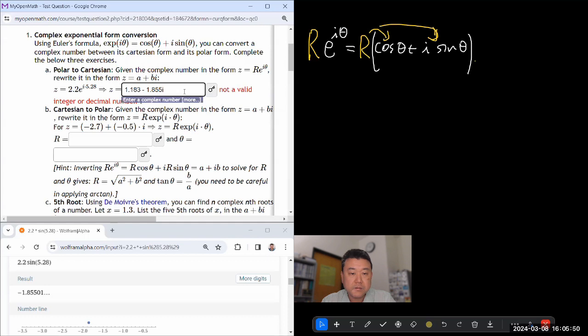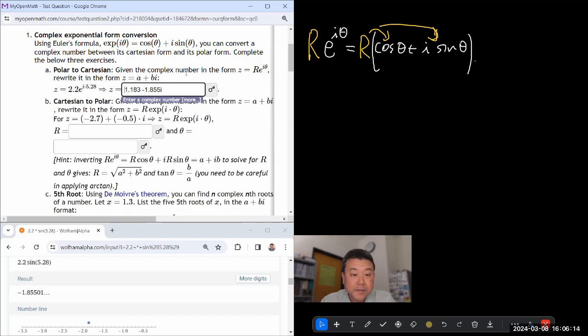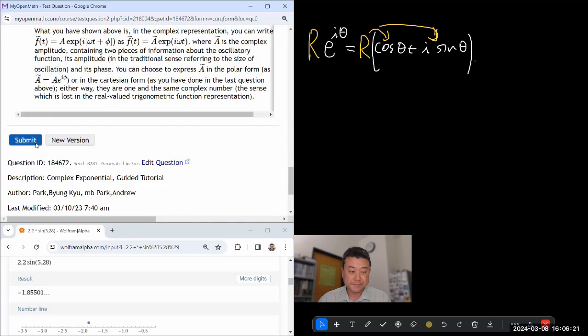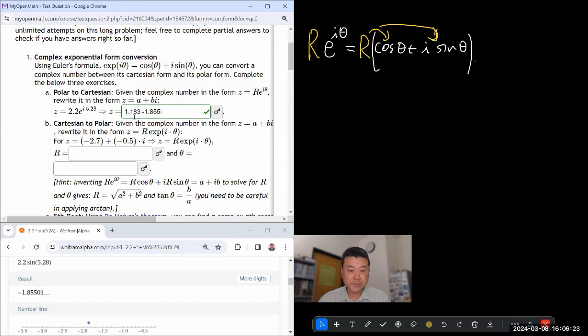So cosine of 5.28, and if I just leave it that way, WolframAlpha will interpret that as being in radians - that's its default interpretation. So my real part is 1.183. For my imaginary part, R is the same, theta is the same, the only thing that changes is instead of cosine, now it's sine. That's the correct answer.